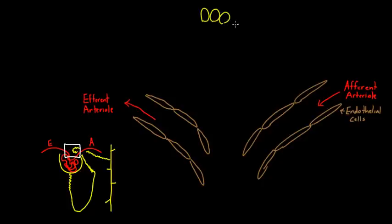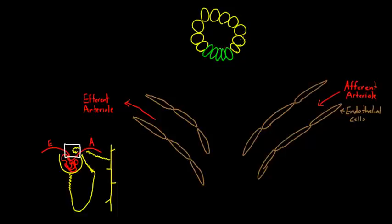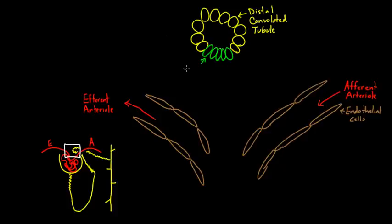There are some very special cells in here that I'm going to draw in a different color. They are the macula densa cells - they're actually part of the tubule, but they're very special. So this is the distal convoluted tubule, and in green, the macula densa cells. A lot of names here, and I want you to start feeling comfortable with them because they're going to be used quite a bit.